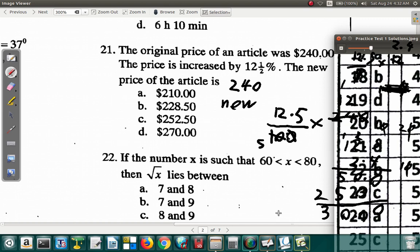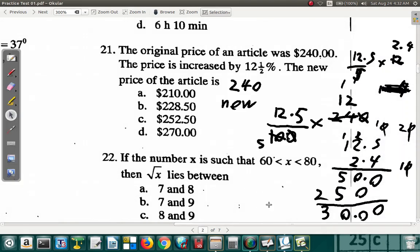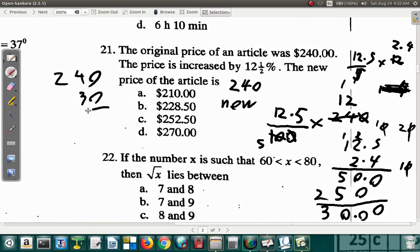Because we had 240 plus the increase. When we did this. So, 240 plus 30. 240 plus 30 equals 270. That's the answer.